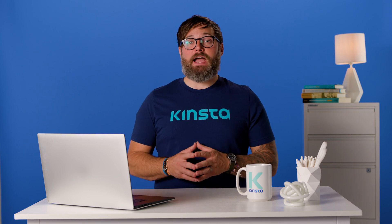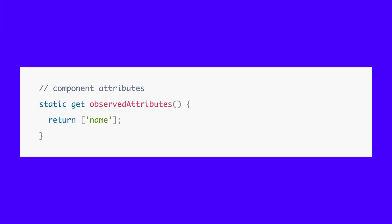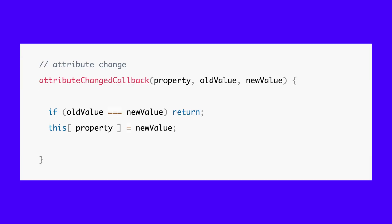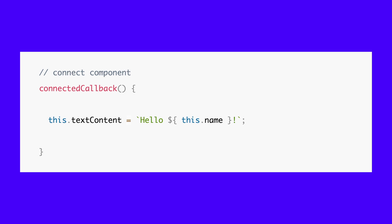A static observedAttributes property should return an array of properties to observe. An attributeChangedCallback method is called when an attribute is defined in the HTML or changed using JavaScript. It's passed the property name, old value, and new value. In this example, only the name property would ever be updated, but you could add additional properties as necessary. Finally, you need to tweak the message in the connectedCallback method.